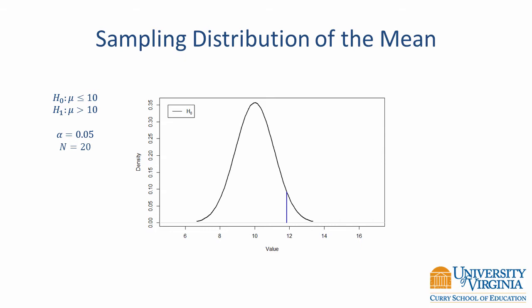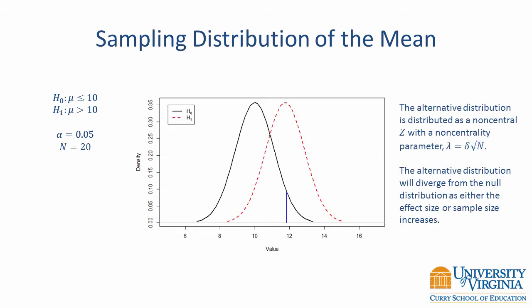In order to compute power we have to translate this critical value from the null distribution to the alternative distribution. To obtain the alternative distribution we have to compute a non-centrality parameter lambda. This parameter is a function of the effect size delta and the sample size n. The alternative distribution is going to diverge from the null distribution as either the effect size or sample size increases. Increasing either one of those is going to increase the non-centrality parameter. Once we have the non-centrality parameter we can translate the critical value from the null distribution to a value on the alternative distribution. We then look at the area above this value on the alternative distribution to obtain statistical power. Note that these procedures only apply for an upper tailed test.